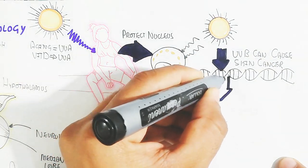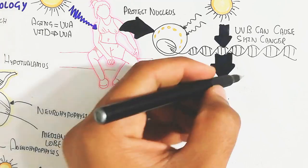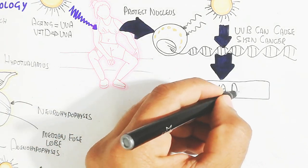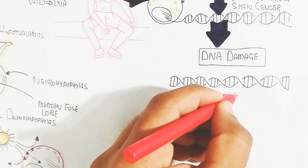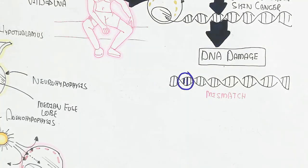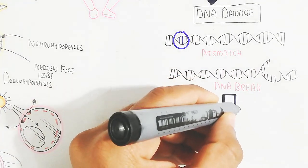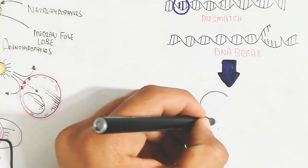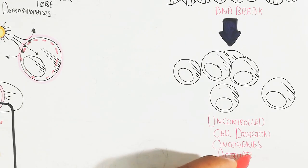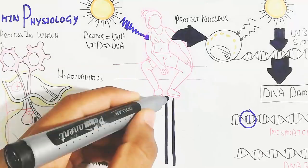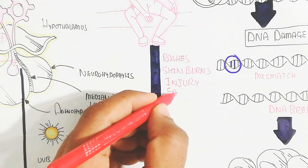UVB can cause skin cancer. Damaged DNA due to mismatches, unrepaired breaks, or other processes can lead to point mutations. These mutations can activate oncogenes, causing uncontrolled cell division and cancer. Additionally, rashes, skin burns, injuries, and conditions such as erythematosus are among the many skin diseases possible due to sunlight exposure.